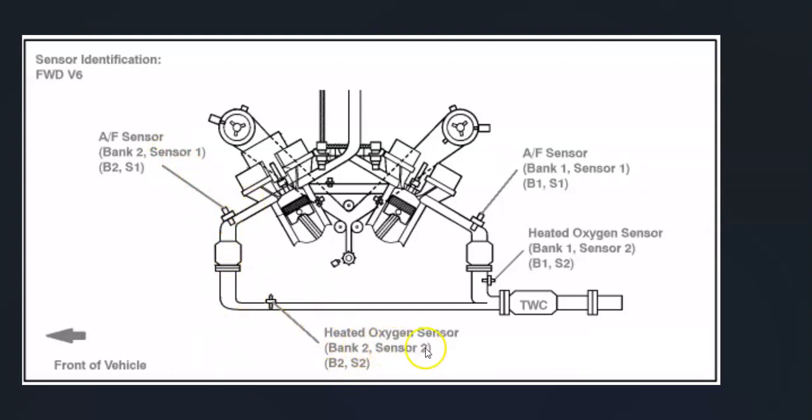As you can see right here, here's bank 2, sensor 2 is right here, right after the catalytic converter. So first thing to do is locate where this bank 2 sensor 2 is on your Toyota.